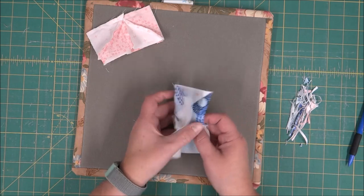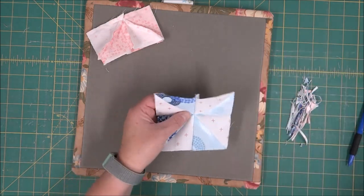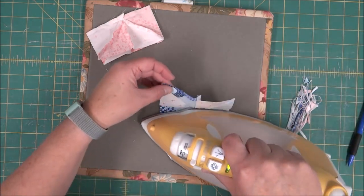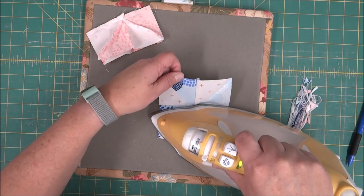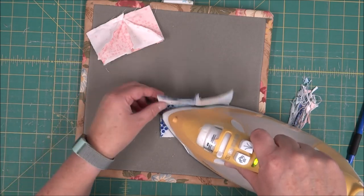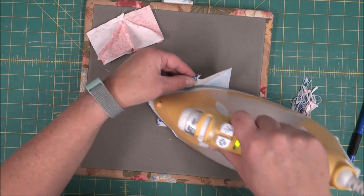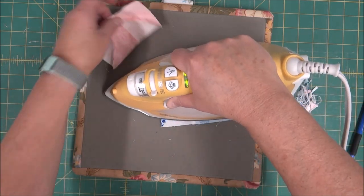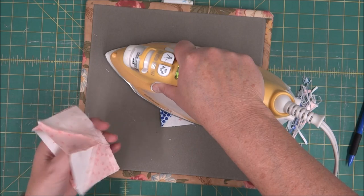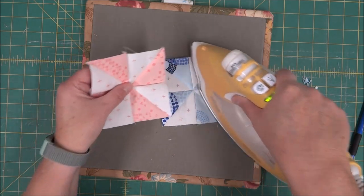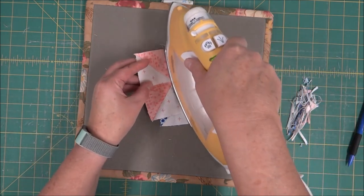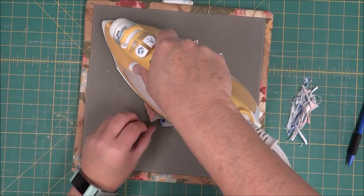Now that I have both sewn, I can go ahead and open it up and give it a good press. That center is going to be a little bulky because there's a lot of fabric there. So just give it a good press to let it lay down. And then repeat it with the second block or as many as you are making.